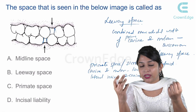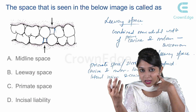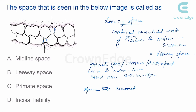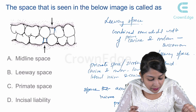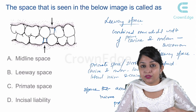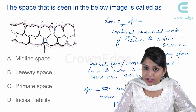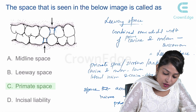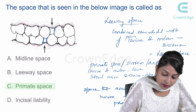Incisor liability is the difference between the space required to accommodate the larger permanent incisors compared to the space present from the smaller primary incisors. Knowing these different meanings, it's easy to arrive at the right answer: primate space — the space between the lateral incisor and canine in the maxillary arch, and between the canine and first premolar in the lower arch.